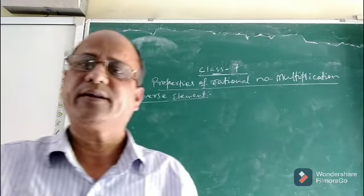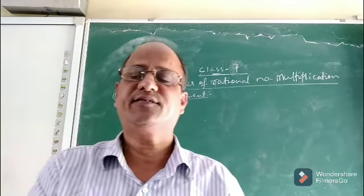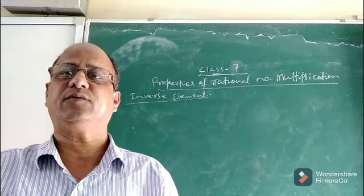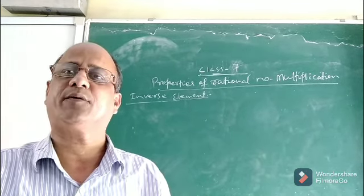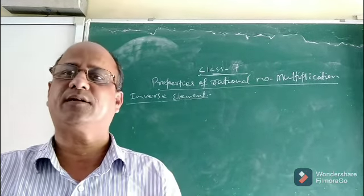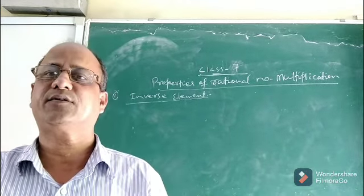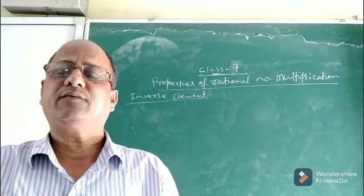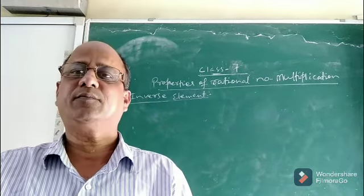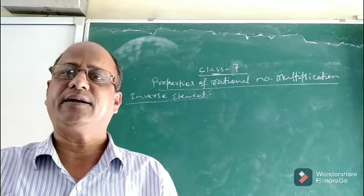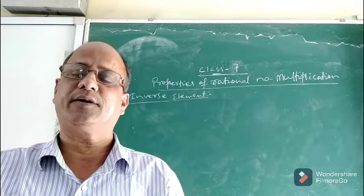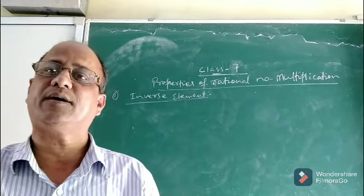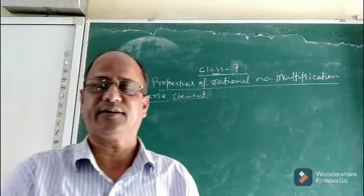Good morning, children. In the previous session we were discussing about different properties of rational number multiplication. I was discussing about multiplicative identity, the fourth property of rational number multiplication — existence of multiplicative identity.